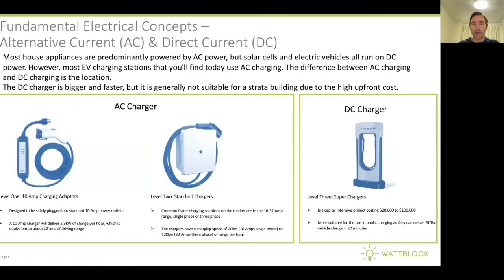In terms of electric vehicle charging, there are two types of current: alternating current and direct current — AC or DC. Most household appliances are powered by AC, and most of the EV charge stations available at the moment use AC charging. However, there are fast DC chargers available, and DC fast charging is usually used more in shopping centers or on roadside charging stations for faster charging.